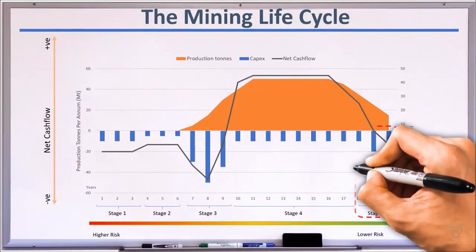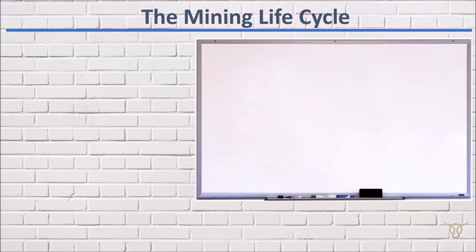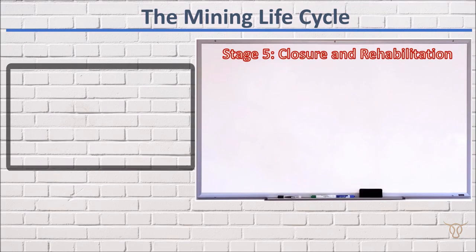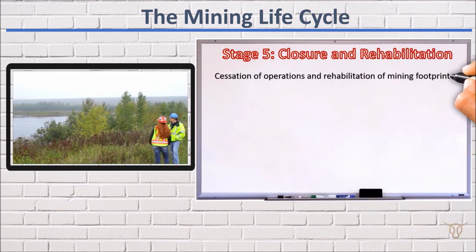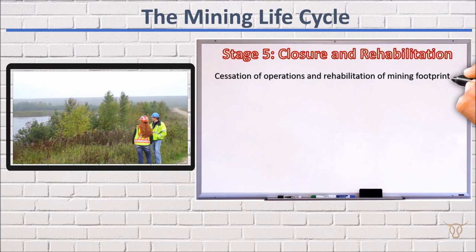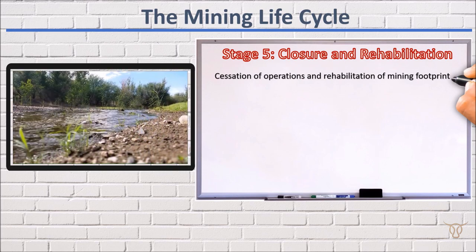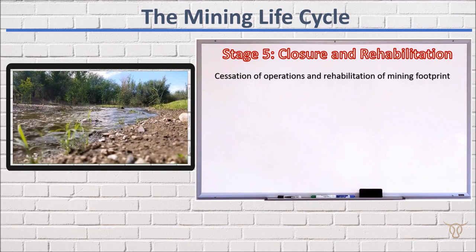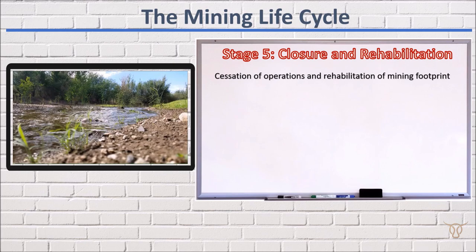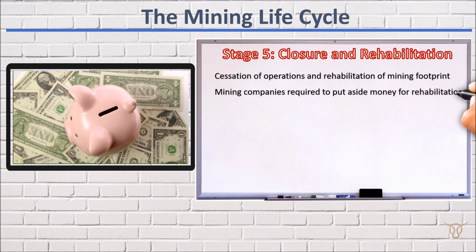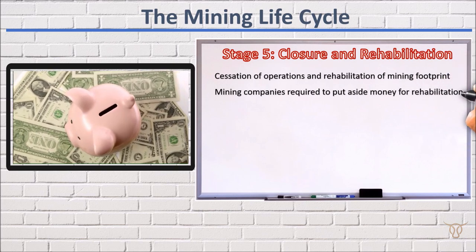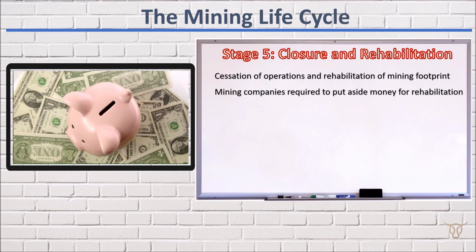Stage 5: Closure and Rehabilitation. As the mine reaches its end of life, sponsors begin to implement closure and rehabilitation plans. This involves the orderly cessation of operations and the rehabilitation of the mining footprint in order to restore the land to its previous state before mining operations took place. During their lives, mining companies would be required to put aside sums of money periodically to prepare for their eventual closure and rehabilitation stage.